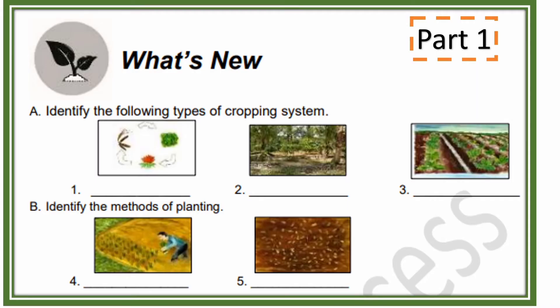For the first part of the quiz, identify the following types of cropping system for pictures 1, 2, and 3. For numbers 4 and 5, you will identify the methods of planting. Don't forget that your answer must be shown in the comment section or in the live chat. You will be given 2 minutes to finish the task.